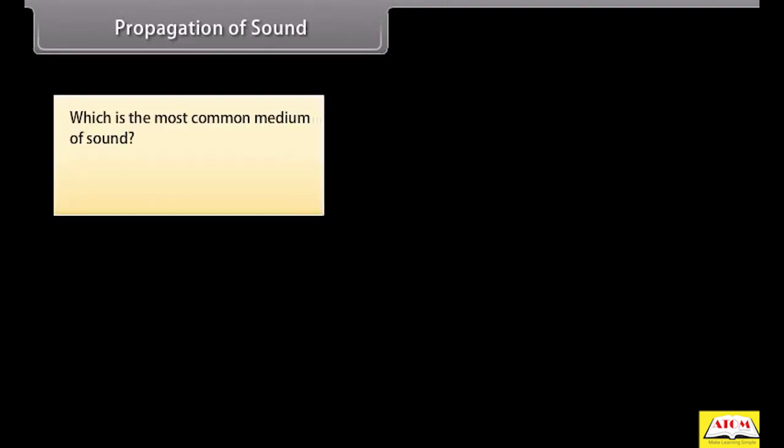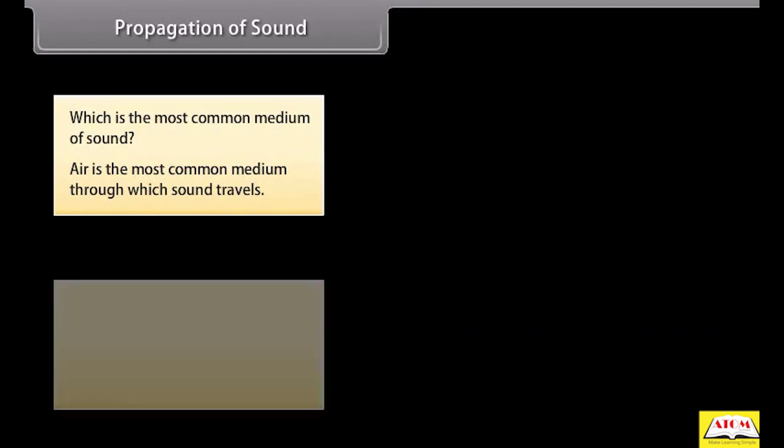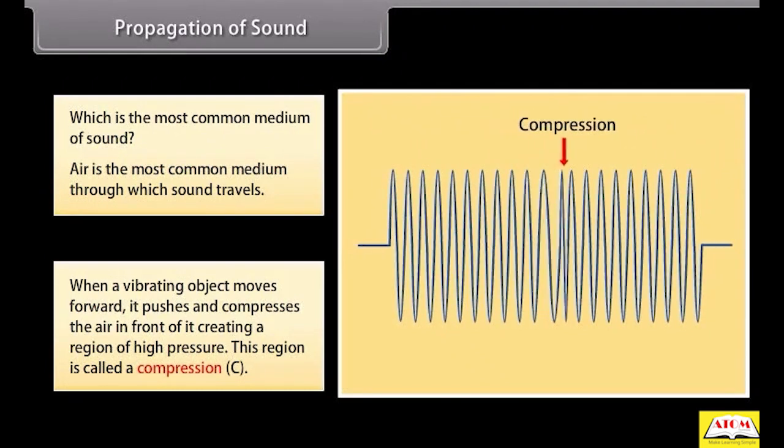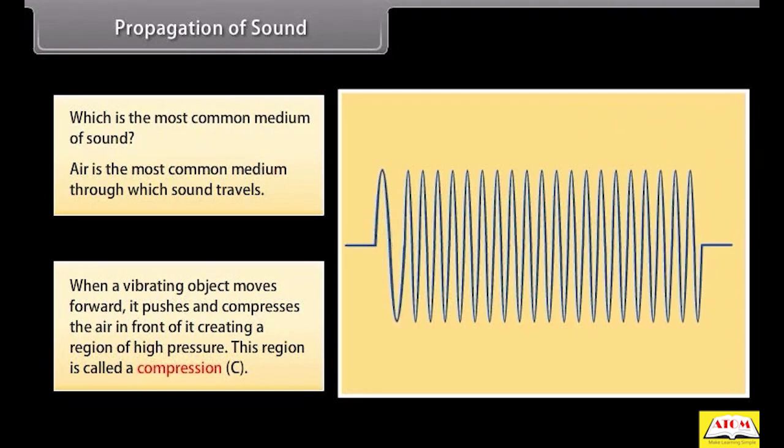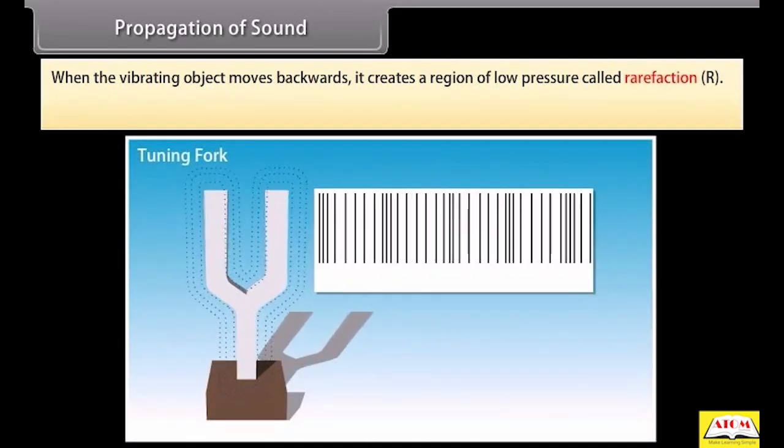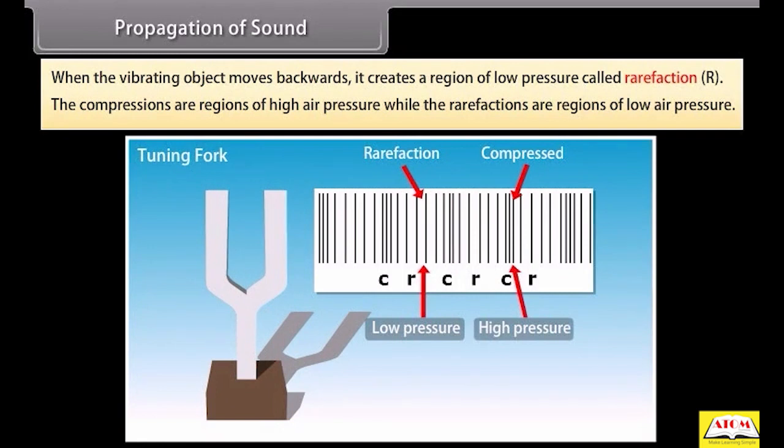Can you tell the most common medium of sound? Air is the most common medium through which sound travels. When a vibrating object moves forward, it pushes and compresses the air in front of it, creating a region of high pressure. This region is called a compression. And when the vibrating object moves backwards, it creates a region of low pressure called rarefaction. The compressions are regions of high air pressure while the rarefactions are regions of low air pressure. Look at this image. It shows a sound wave created by a tuning fork and propagated through the air in an open tube. These are the regions of compression and these are the regions of rarefaction.